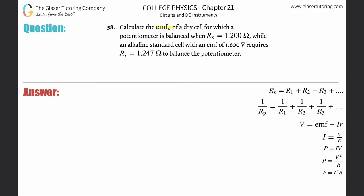Number 58. Calculate the emf sub x of a dry cell for which the potentiometer is balanced when r sub x is 1.2 ohms, while the alkaline standard cell with an emf of 1.6 volts requires r sub s of 1.247 ohms.